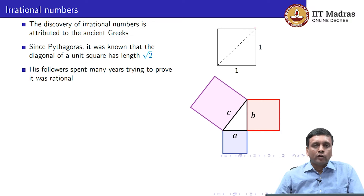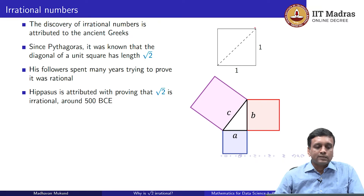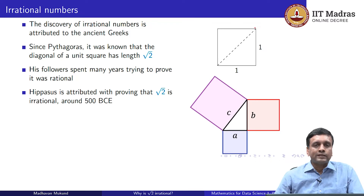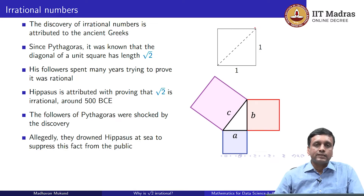For Pythagoras, it was very important to understand how to describe the square root of 2 as a rational number, and he and his followers spent many years trying to prove that it could be expressed as a rational number. Much after Pythagoras — about 50 or 60 years later — one of his followers, Hippasis, is claimed to have proved that square root of 2 is irrational, around 500 BCE. The followers of Pythagoras had a very mystical idea about numbers and felt that rational numbers should form the basis of all science and philosophy. They were really shocked by this discovery and felt it could not be revealed to the public because it was very dangerous. In fact, it is said they allegedly drowned him in the sea to prevent this from being made public. So the square root of 2 being irrational has a rather colorful history.